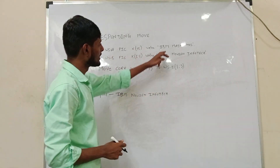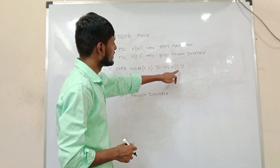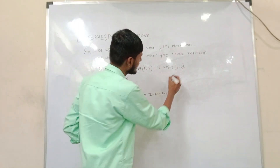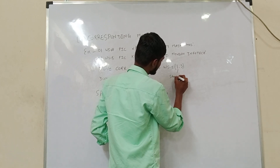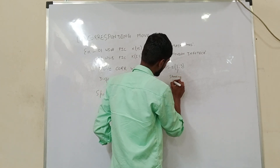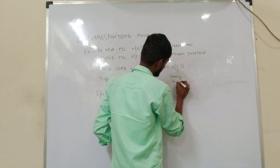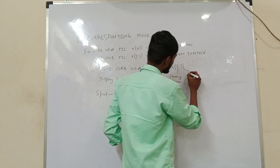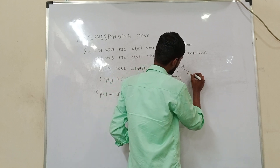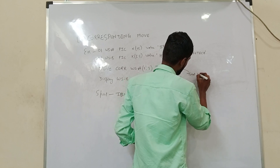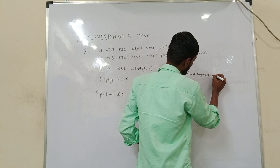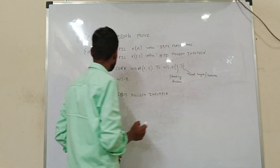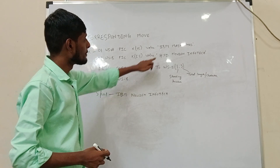It will take 'IBM' based on position and length — here one is the starting position and three is the total length of characters. By using corresponding MOVE we can move a particular set of characters from one variable's value to another variable.